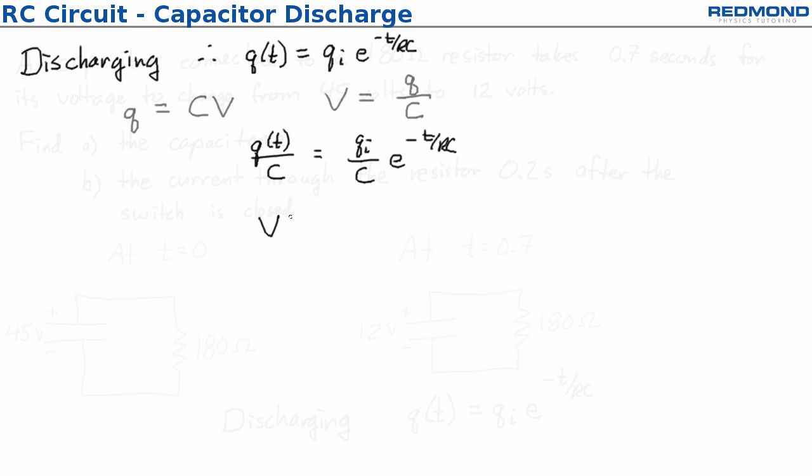I can write that as a function for voltage. I have voltage as a function of time is equal to the initial voltage across the capacitor times e to the negative t over RC.